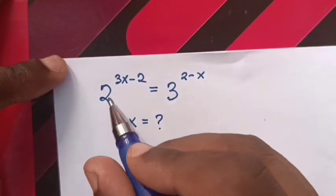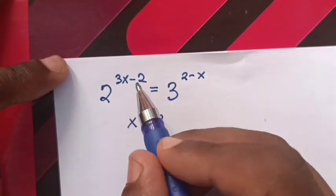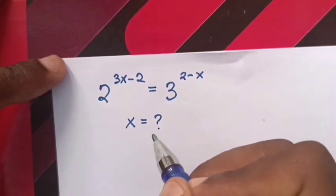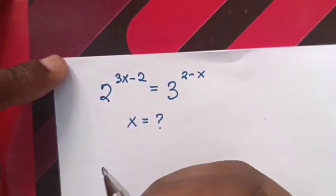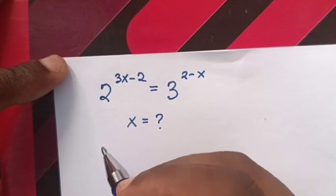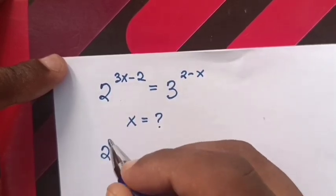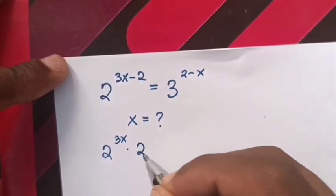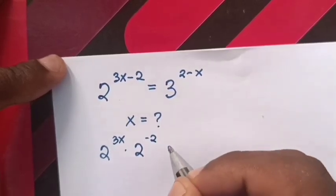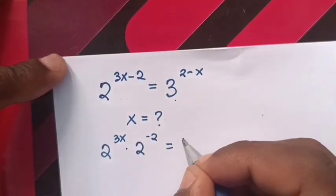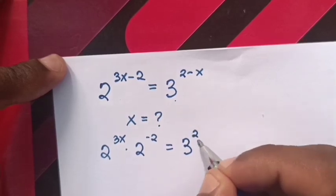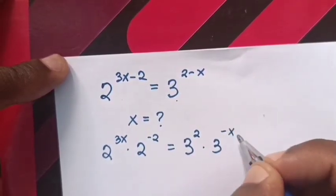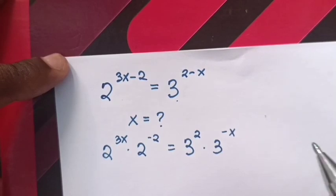Hello. How to solve 2 power (3x minus 2) is equals to 3 power (2 minus x). Find the value of x. This exponential question can be written as 2 power 3x times 2 power negative 2 is equals to 3 power 2 times 3 power negative x.